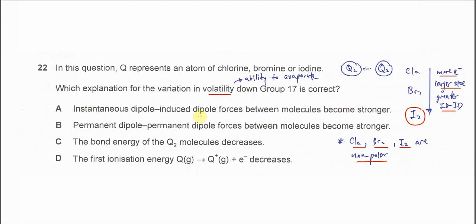Because of these id-id forces, when going down the group they become stronger, then it will be less volatile. So the answer is A.